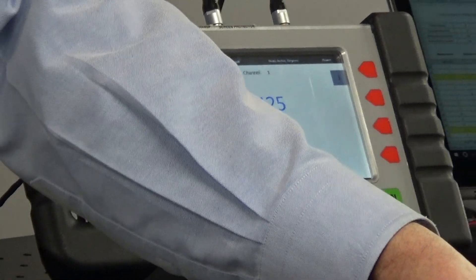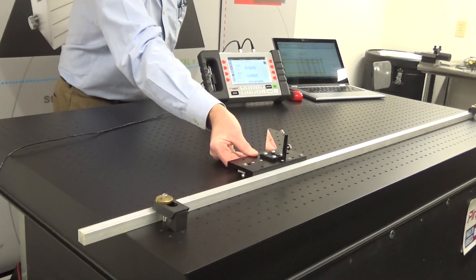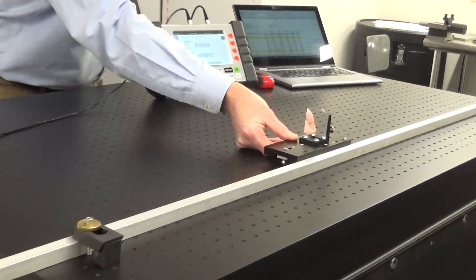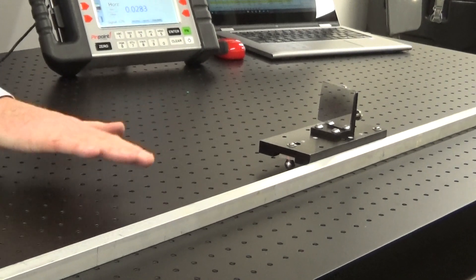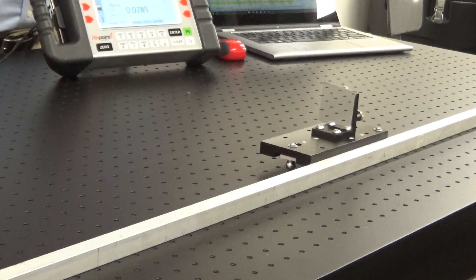The basic process here is this mirror assembly is moved down the length of the bed. As it moves along, the readings change because it encounters slope changes as you go.